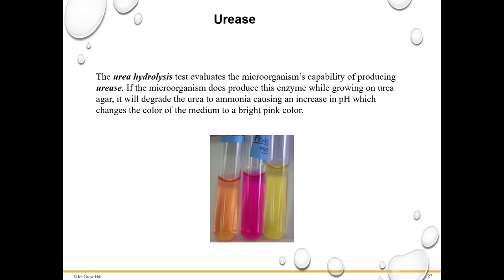The urea hydrolysis test evaluates the microorganism's capability of producing urease. If the microorganism produces this enzyme while growing in urea agar or urea broth, it degrades urea to ammonia, causing an increase in pH. This pH change turns the color of the medium to a bright pink — only bright pink is a positive result. An orangish color would still be considered negative.